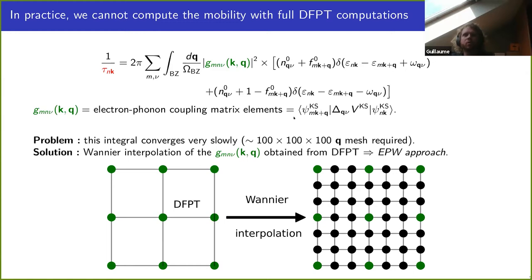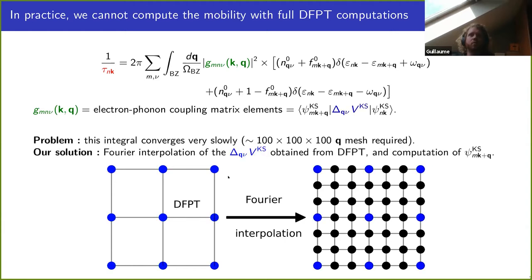The solution is to use an interpolation procedure. In other state-of-the-art software such as EPW within Quantum ESPRESSO, people interpolate the matrix elements directly using Wannier functions. With ABINIT, we decided to interpolate the scattering potentials without Wannier functions, compute the wave functions in a non-self-consistent way, and then compute the matrix elements. We compute the scattering potentials on a typical 10×10×10 DFPT mesh and then fully interpolate them onto a much denser mesh, allowing us to converge the computation of lifetimes and mobility.